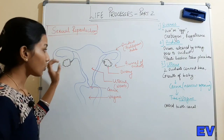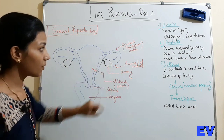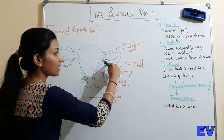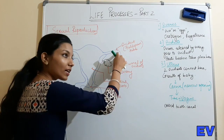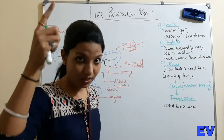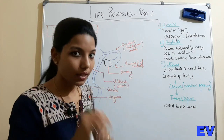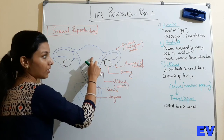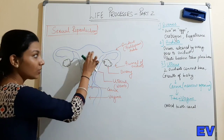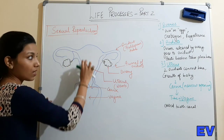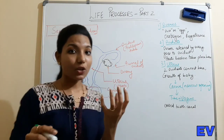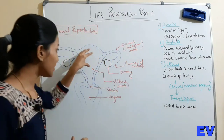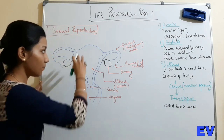Once the ovum is produced in the ovary, there is a funnel-shaped structure - the oviduct - which is not directly connected but covers the ovary. The ovum released from the ovary goes into the oviduct. Unlike in males where sperms are stored in the epididymis, here the ovum directly goes into the oviduct. Both oviducts meet at the uterus.